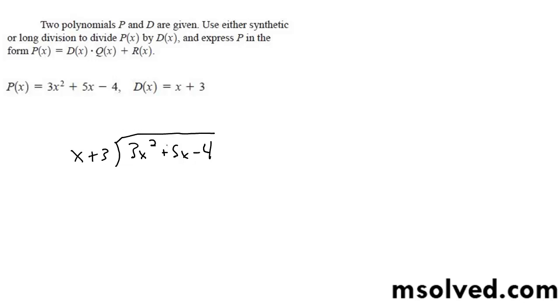Starting off here, so x goes into 3x squared 3x times. Multiply this through so we get 3x squared plus 9x. So then we switch the signs.